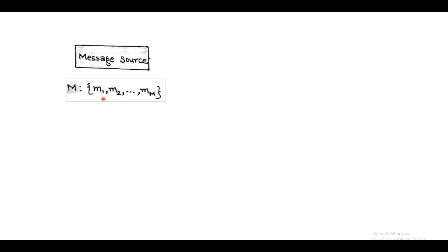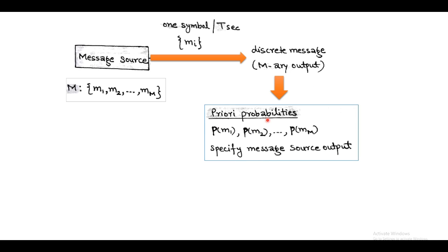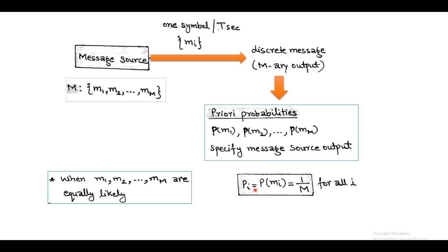The message source contains capital M number of symbols and emits one symbol at a time, that is one symbol per T seconds. This is called M-ary. Each discrete message has a corresponding probability: p(m1), p(m2), up to p(m_M), called a priori probabilities. When all discrete messages are equally likely, the probability of each M-ary output message is 1 over capital M, for all values of i.